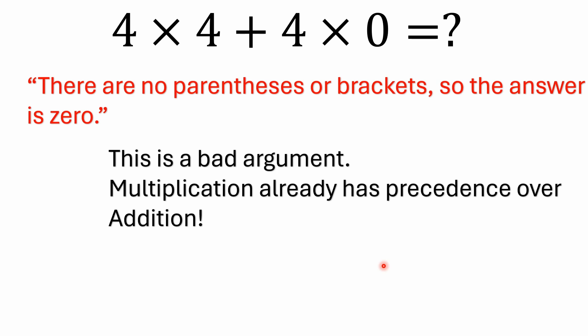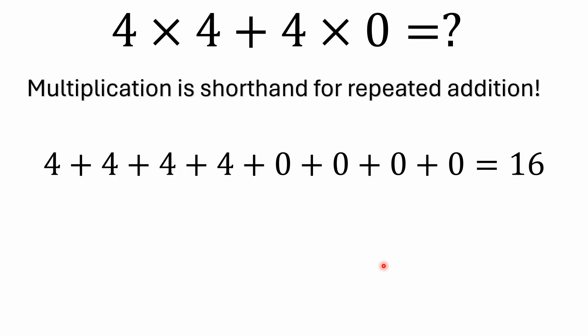You don't want to just memorize the order of six letters, you want to understand the order of operations. And again I'm going to say it again, I have links in the notes with the videos describing the order of operations in more detail. Somebody's going to make a comment in here: well there's no parentheses, there's no brackets so the answer is zero. And again that's a bad argument. Multiplication already has precedence over addition.